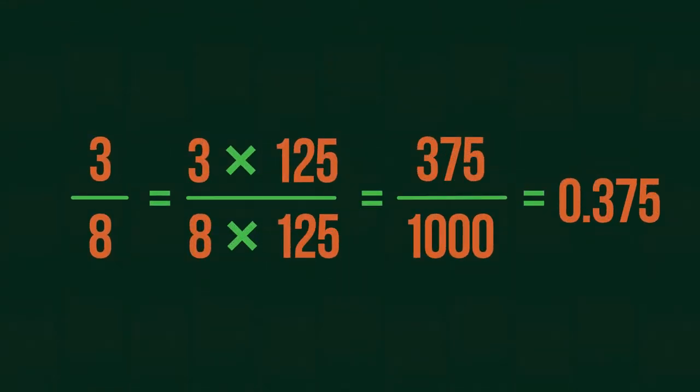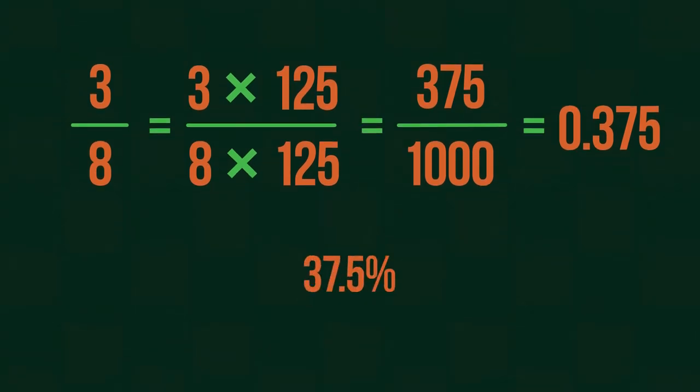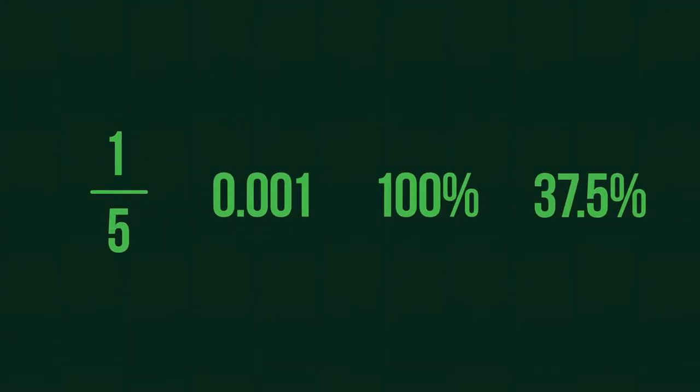0.375 is also our probability, or if we use percentages, it's 37.5%. All of it is the same, and probability can be expressed by any one of these numbers.